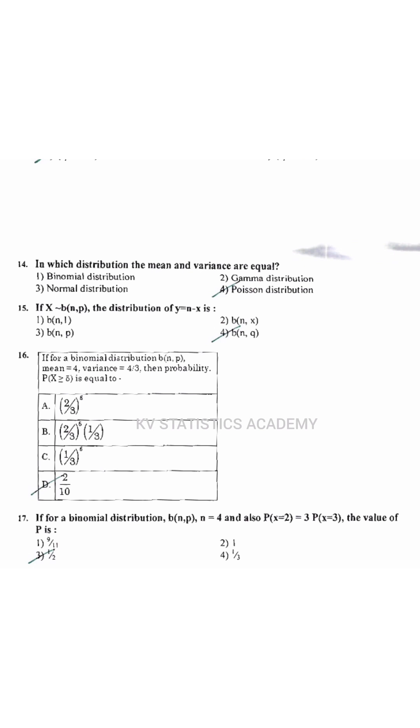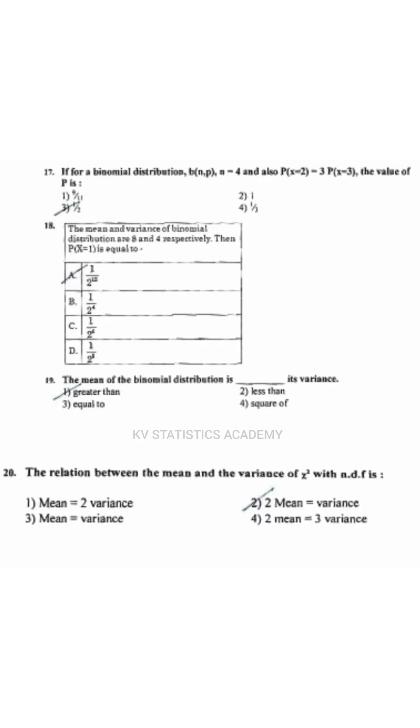If for a binomial distribution B(N, P), mean equals 4 and variance equals 4 by 3, then probability P of X greater than 5 is equal to 2 by 10.